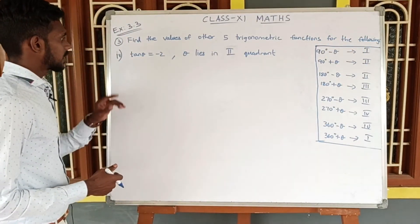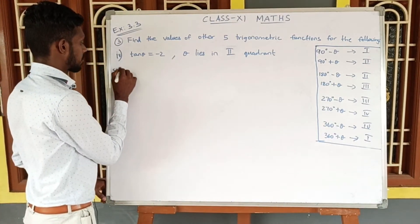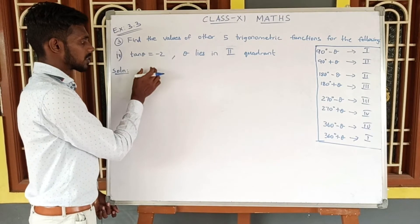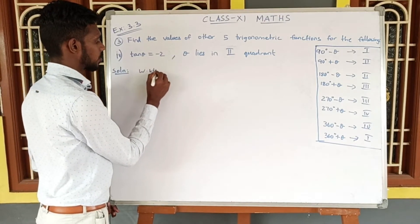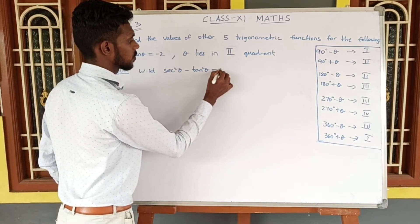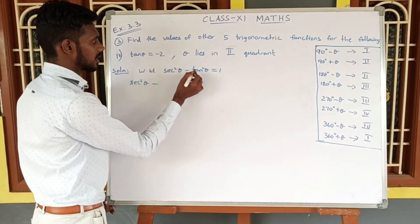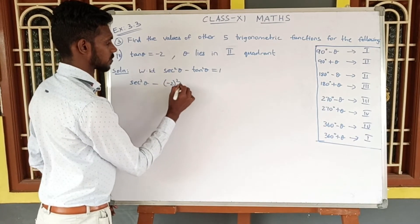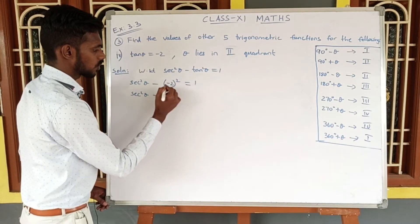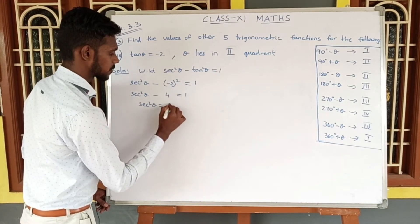Now let's see the fourth sub-question: tan θ = −2, where θ lies in the second quadrant. For this, since we are given tan θ, we use the identity sec²θ − tan²θ = 1. Applying tan θ = −2: sec²θ = 1 + tan²θ = 1 + 4 = 5.